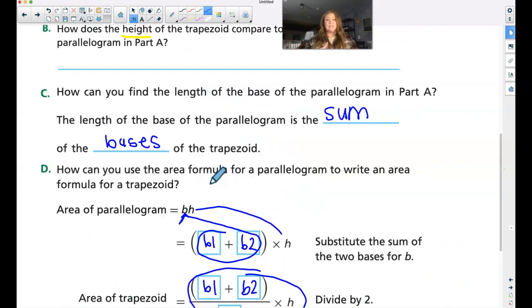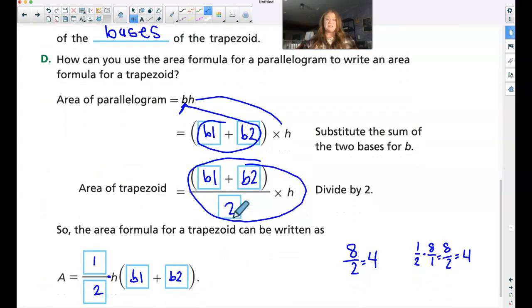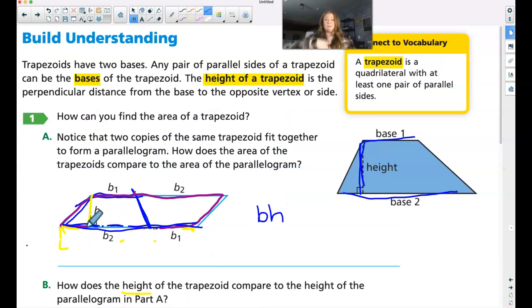So that is the area to find the formula to find the area of a trapezoid. Put your bases together, because we're just really flipping this one to make one big parallelogram. So base and base make one big base, times it by the height, but then we have to cut it back in half to get back to our trapezoid.